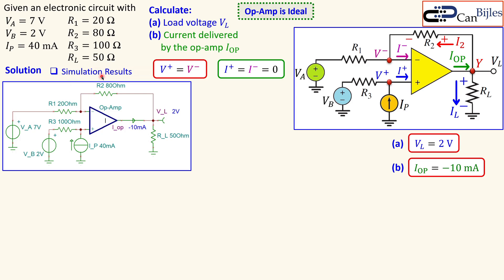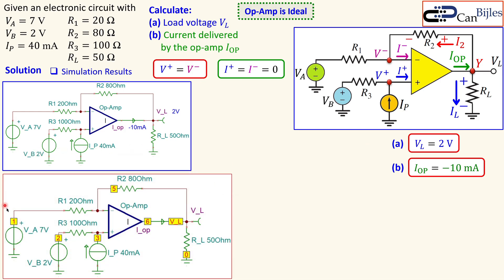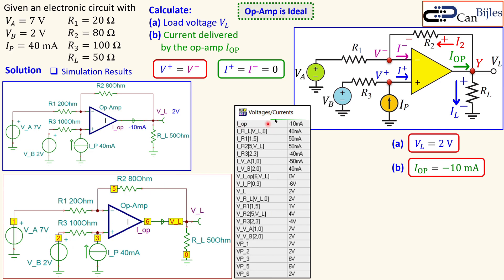We now verify these results in SPICE simulation. The simulation circuit includes R1, R2, R3, Va, Vb, Ip, the op amp, a current arrow to measure Iop in the output branch, and a voltage pin at the load node. The simulation shows −10 milliamps and 2 volts, confirming our calculations. A table of DC results also shows these values, proving our calculations are exactly correct.